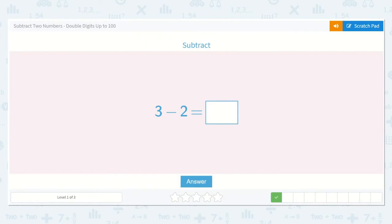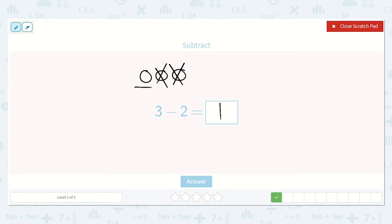Next we have 3 minus 2: 1, 2, 3, and then we take two of them away—1, 2. How many do we have left? Just one.